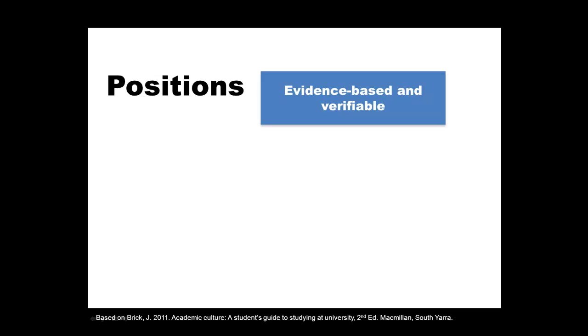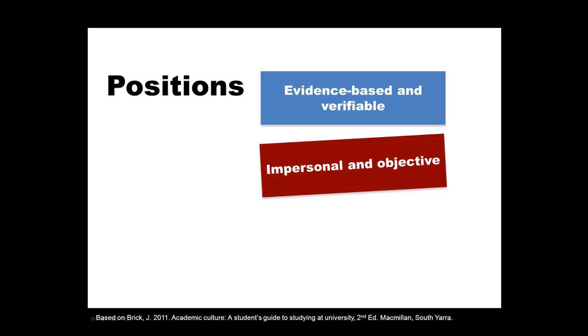An academic position differs from an everyday opinion in three main ways. First, an academic position is based on evidence that can be verified. This means that wherever possible, evidence should include the results of research studies and you should reference the sources of your ideas. References allow your readers to check original sources for themselves. Second, an academic position should be impersonal and objective. To do this, you need to distance yourself from the topic, consider the facts without bias, and apply logic and reasoning to draw your conclusions.